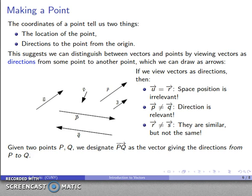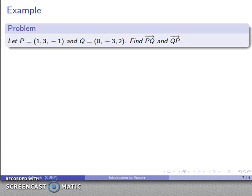More generally, if I have two points P and Q, I can designate the vector PQ with an arrow over it as a vector giving the directions from point P to point Q. For example, let's take the vector going from point P to point Q and find both PQ and QP.